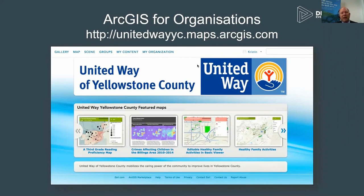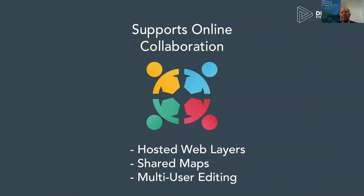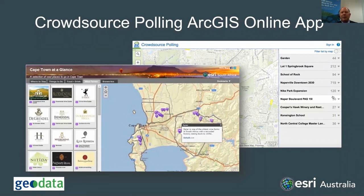Geodesign is not just used by local governments — non-governmental organizations also use it. We worked with a United Way group looking at childhood reading proficiency, crimes affecting children, and at-risk populations. In conclusion, online collaboration is at the core of geodesign, and these tools are among the premier tools bringing us into dealing with community resiliency, climate change, food security, and other pressing issues our communities need to address. Crowdsource polling is also critical — we need to engage the public in voting on geodesign principles and being engaged with local governments and councils in planning for the future.